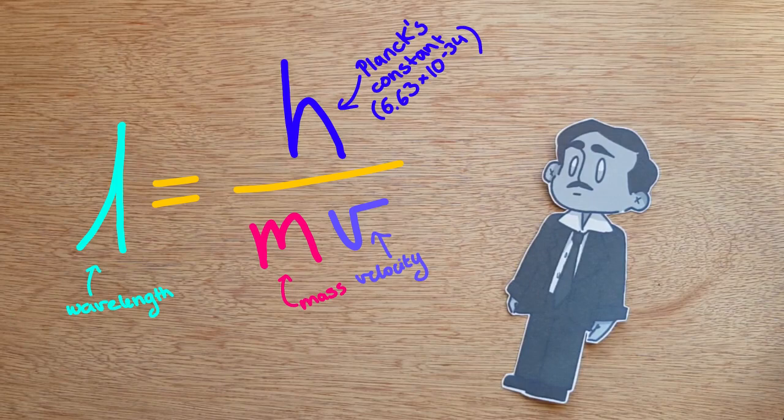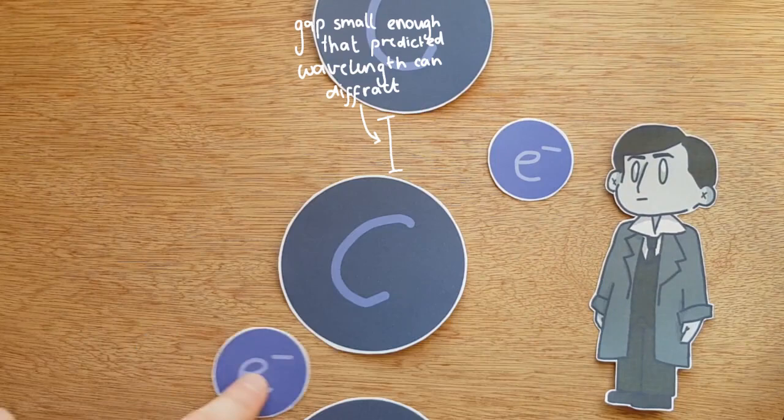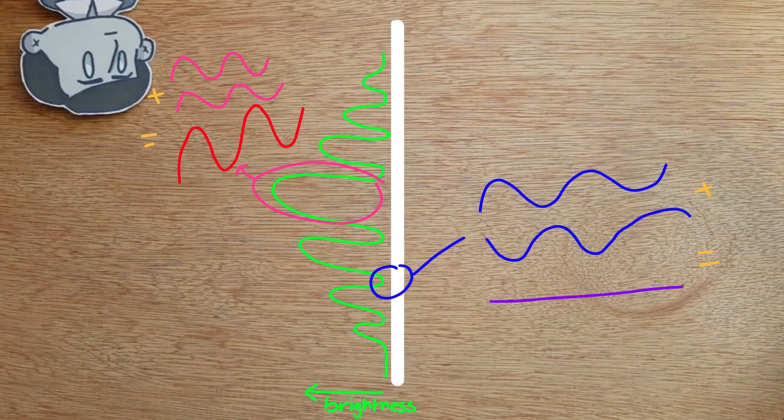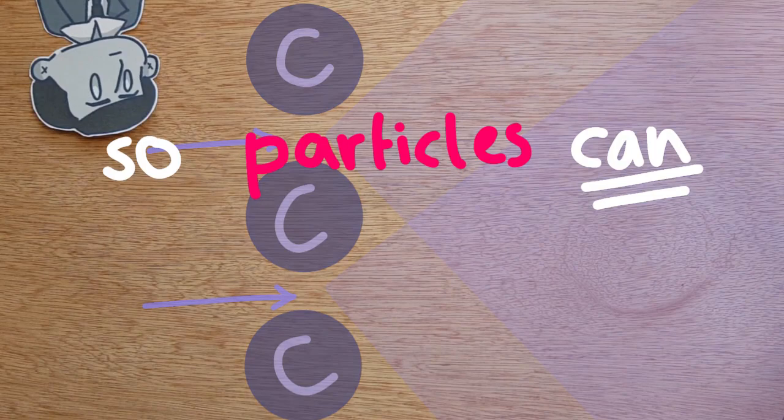In 1927, George Thompson fired electrons between the atoms of carbon. This was the result. This pattern meant that the electrons interfered with themselves, so they must have diffracted, like waves. And they diffracted the way that was predicted by de Broglie, so particles can act like waves.